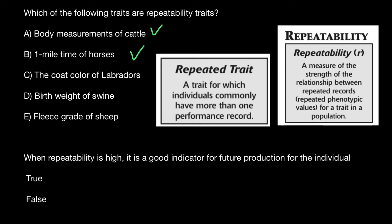Variant C: the coat color of Labradors. This is not a repeatable trait because they get their coat color when they are born, and that's it — so this is not a repeatable trait. When we take these measurements, let's say in a month or two or three, the color is going to be the same.